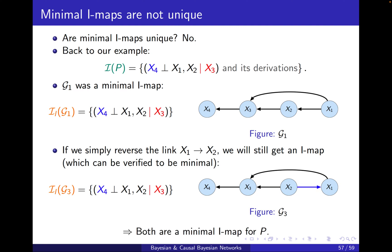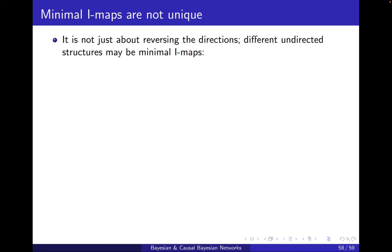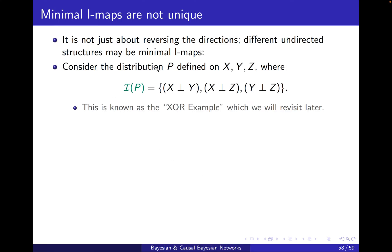Both of them are minimal IMAPs. So even minimal IMAPs are not unique. And you may ask: is it only because of reversing the direction of links? Well, not always — here's another example. It's not just about reversing directions; even the structures can be completely different.